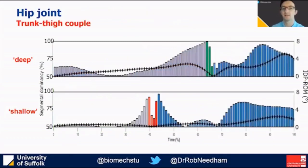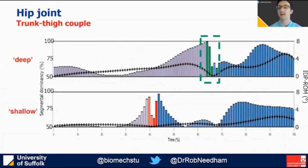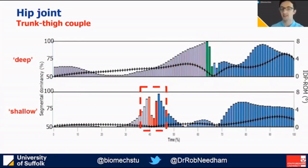Looking at the same two individuals at a different joint — the hip, focusing on the trunk-thigh couple — we again see many of the same differences in range of motion or duration of phases. At the transition, the deep strategy is coloured green and the shallow is red. Where both are in-phase, for the deep strategy the proximal trunk segment reverses its direction first, whereas for the shallow strategy the distal thigh segment reverses its direction first.